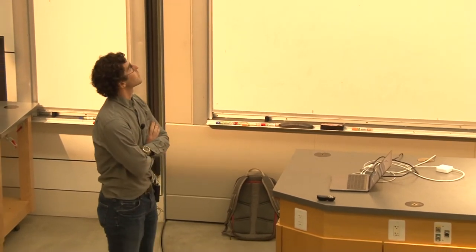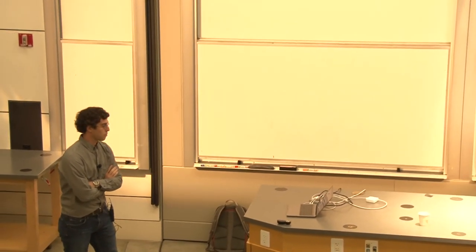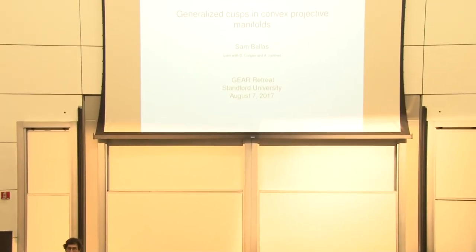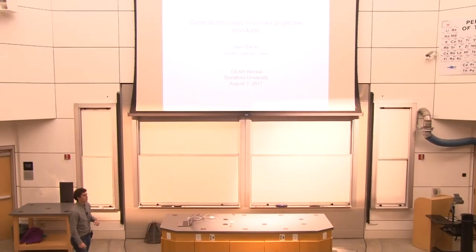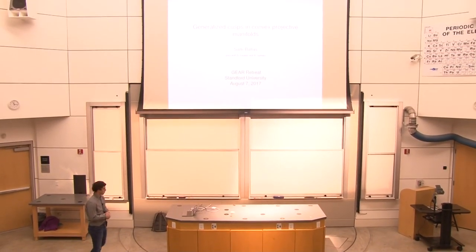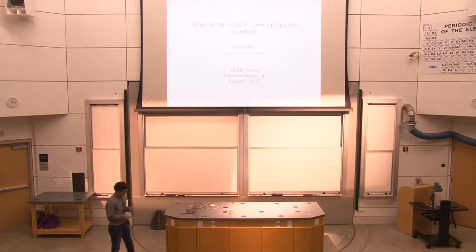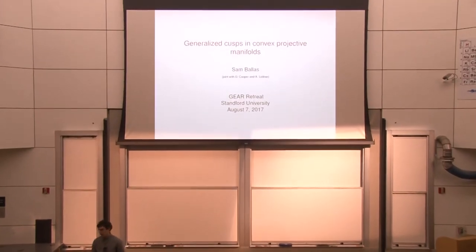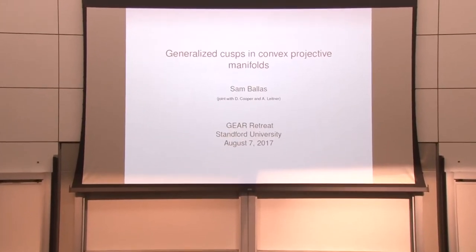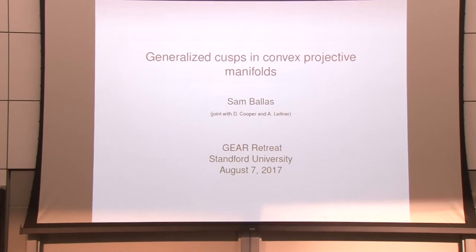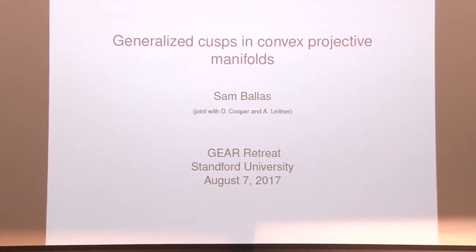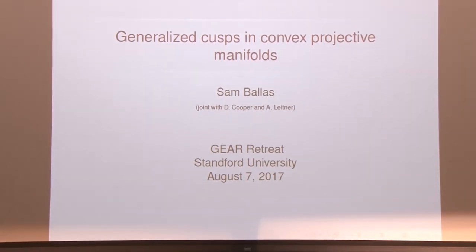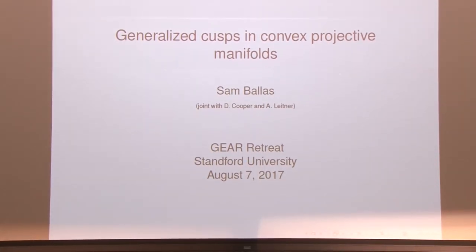Everything I want to tell you about today is joint work with both Darrell Cooper and Ariel Leitner. In a sense, the stuff I want to tell you about is complementary to the sort of things that Fannie was talking about this morning. What I want to tell you about is a class of projective manifolds that naturally occur as ends of properly convex manifolds, but not the kind that act co-compactly on any sort of properly convex set. These are naturally analogs of finite volume hyperbolic manifolds.